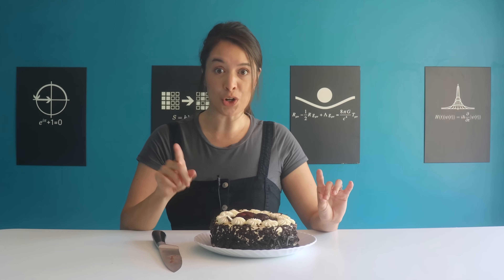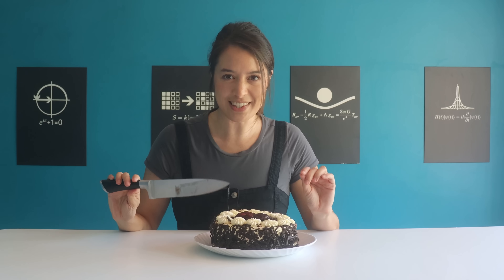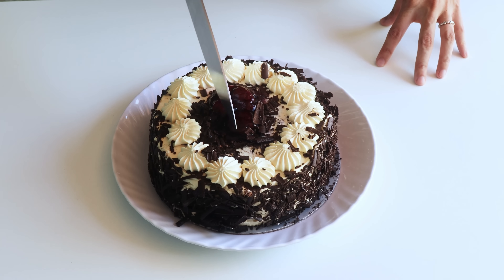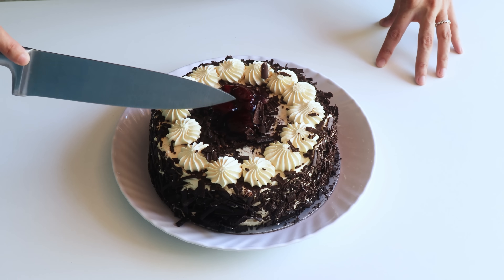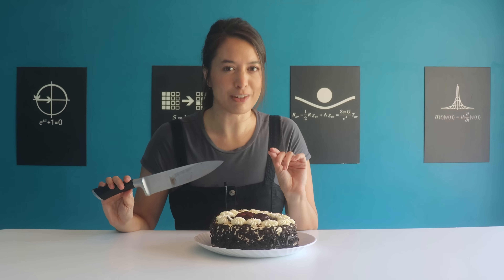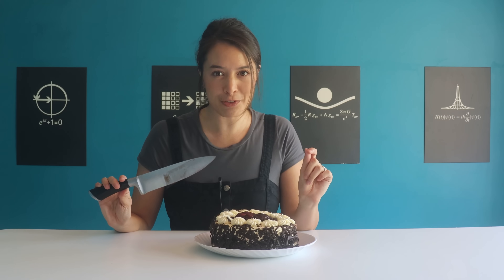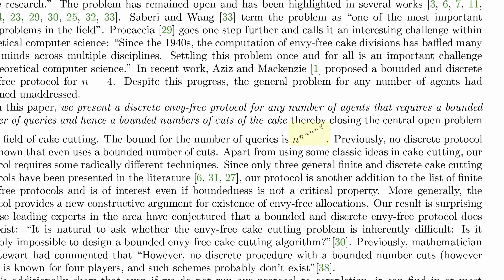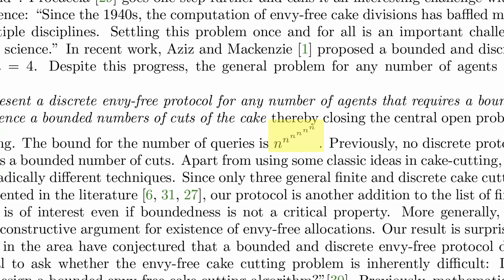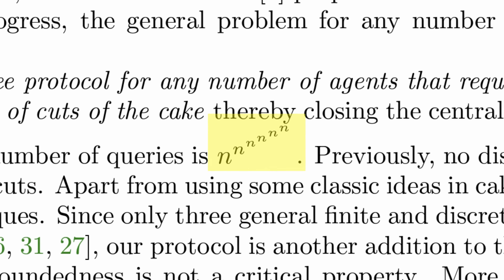Imagine you're at a birthday party and you're asked to cut the cake for all of your friends. What's the fairest way to cut it to make sure everyone is happy with their piece? This might sound like a simple question, but it took computer scientists over 70 years to solve. The algorithm is insanely complex — to share between five people, it can take more cuts than the number of atoms in the universe.